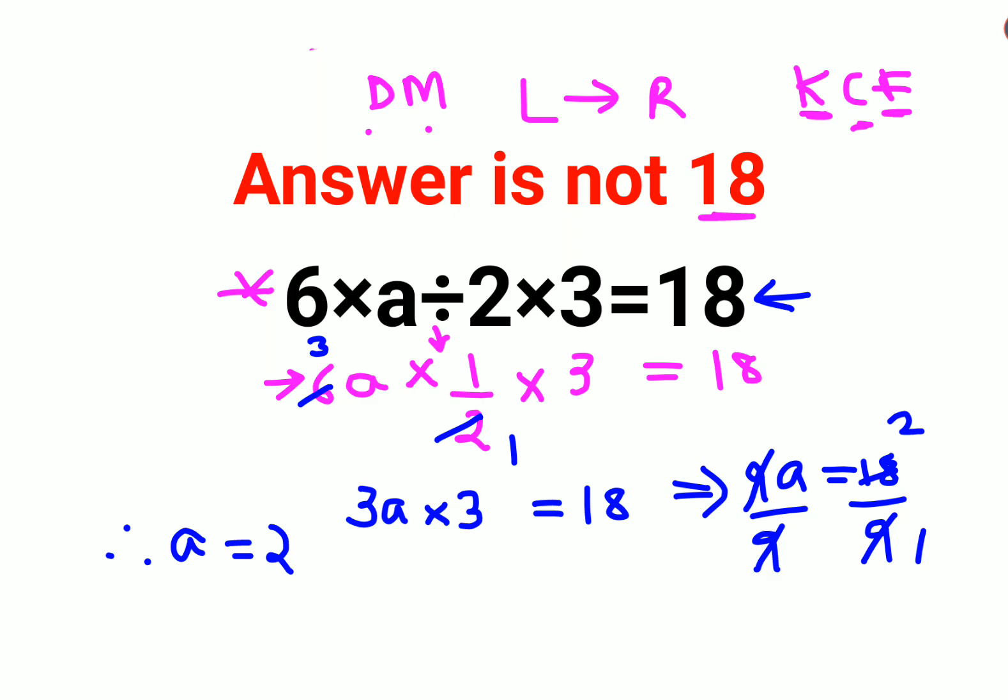Now let's put this over here and see whether we are getting the answer as 18. So we have 6 into 2 which is 12 divided by 2 into 3. So this is 2 and 6. So 6 into 3 gets you 18 which is your RHS.